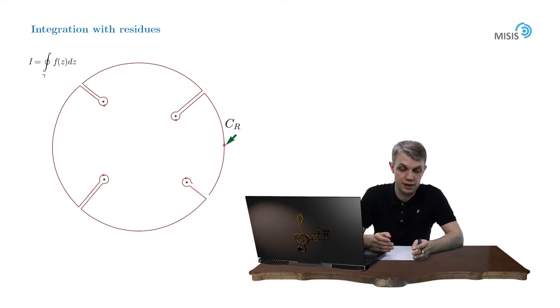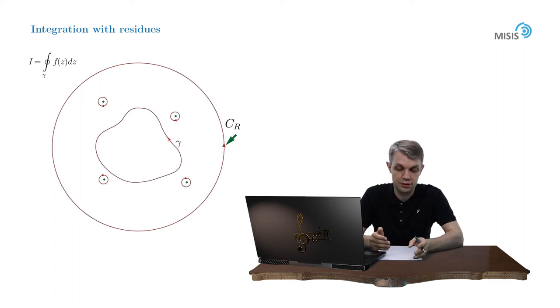As before, we argued that the integrals along these infinitely closed segments passed in opposite direction cancel each other. Now the integral along the infinitesimal circle surrounding the pole was computed in the previous video, and we proved that it was equal to 2πi times the residue of the function at a particular pole.